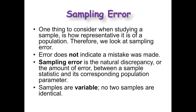Keep in mind this whole idea about sampling error. In the very beginning of the class, we talked about how samples are not exactly the same as populations, and that's okay. We don't expect a sample to have exactly what the population has, but it should mirror the population pretty well. There is going to be sampling error, and sampling error doesn't necessarily mean the researcher messed up. It's just this natural discrepancy between the sample statistic and its corresponding population parameter. Just like humans are variable and unique, samples are also variable — no two samples are identical.